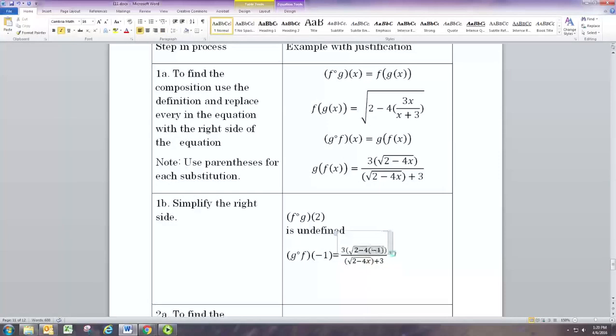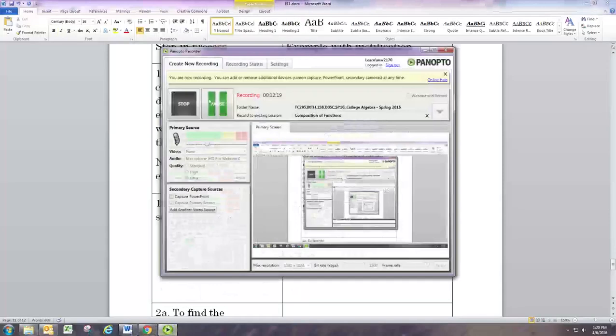So we can now find the value of these things at certain x values. f circle g of 2 is undefined. We saw the graph was not defined for x larger than 0.6. And g circle f is defined at negative 1. And we can just use this formula and replace x with negative 1. After some simplifying, you'll see this is 2 plus 4, which is just square root of 6. And we probably don't want to mess with it any more than that. You could approximate that using a calculator, but that's going to be as exact as it gets.